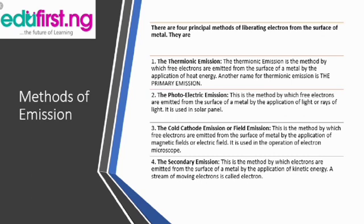The second method is photoelectric emission. This is the method in which free electrons are emitted from the surface of a metal by the application of light or rays of light. This is commonly used for solar panels, where we are talking about sunlight.